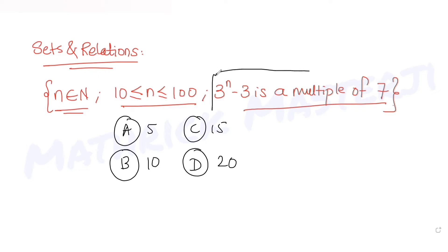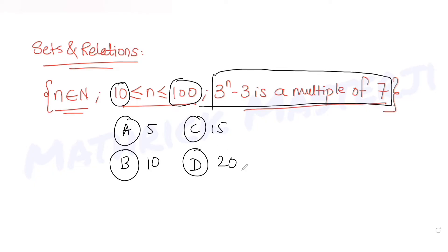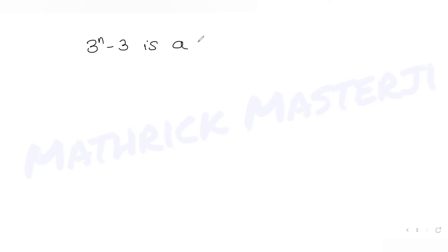This condition looks difficult. We already know n should lie from 10 to 100. Let's figure out the condition: 3^n minus 3 should be a multiple of 7. So that is the question — how many natural numbers from 10 to 100 would satisfy this condition?